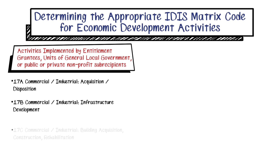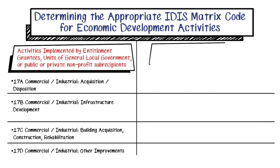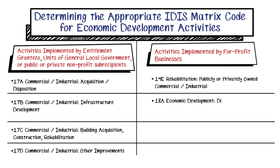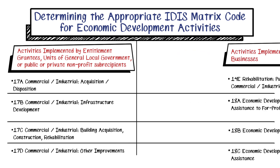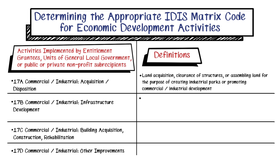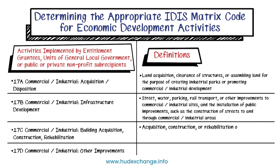IDIS Matrix Codes 17A through 17D are used for special economic development activities carried out by entitlement grantees, units of general local government, or their public or private non-profit sub-recipients. IDIS Matrix Codes 14E and 18A through 18C are used for activities carried out by for-profit businesses. Examine the matrix code definitions shown on screen and found at the HUD Exchange link at the bottom of the screen and on the landing page of this module at www.hudexchange.info to determine the code that matches the activity to be implemented.